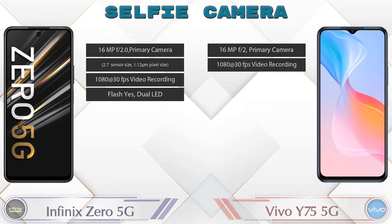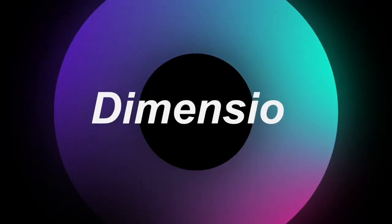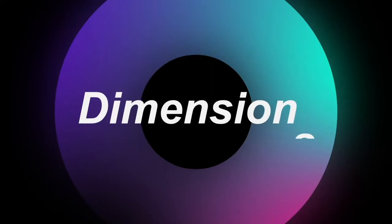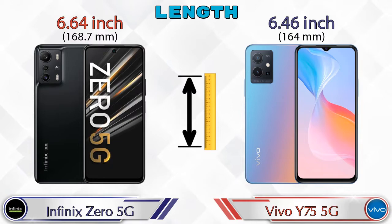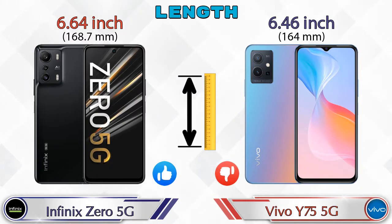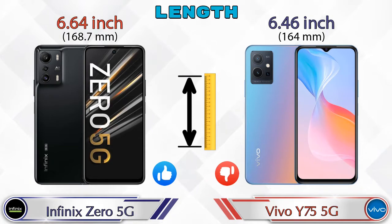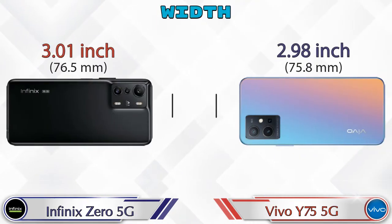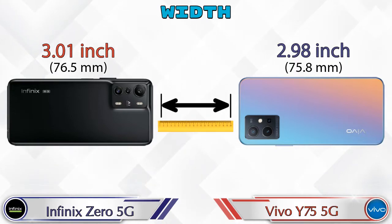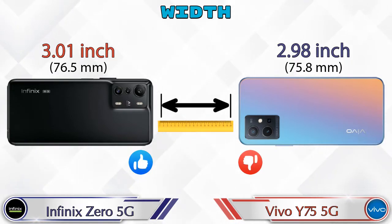Now let's check the dimensions. In terms of length, the Zero 5G measures 6.64 inches and the Y75 5G measures 6.46 inches, making the Y75 5G shorter. For width, the Zero 5G is 3.01 inches and the Y75 5G is 2.98 inches, which is slightly narrower.